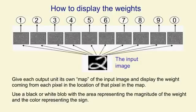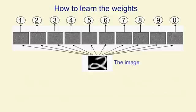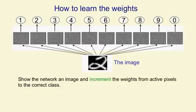Now what we're going to do is show that network some data and get it to learn weights that are better than the random weights. The way we're going to learn is when we show it an image, we're going to increment the weights from the active pixels in the image to the correct class. If we just did that, the weights could only get bigger, and eventually every class would get huge input whenever we showed it an image.